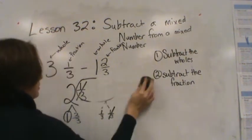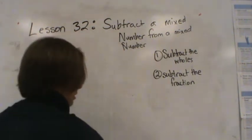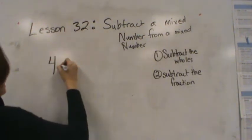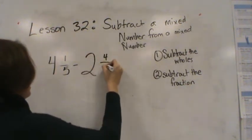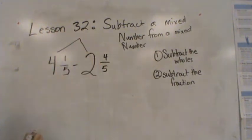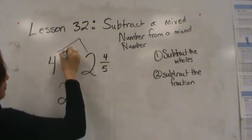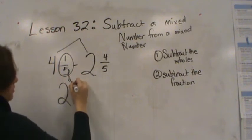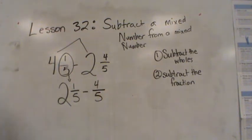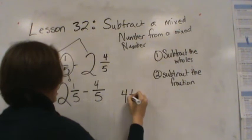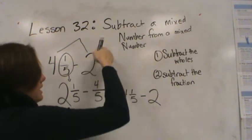Let's try another one. My next problem for you is 4 and 1/5 minus 2 and 4/5. So the first thing I'm going to do is subtract the wholes. What is 4 minus 2? 4 minus 2 is 2, and then I'm going to bring down this 1/5 minus 4/5.